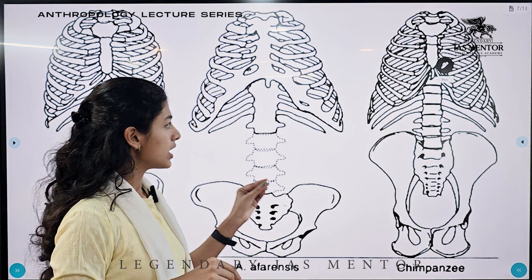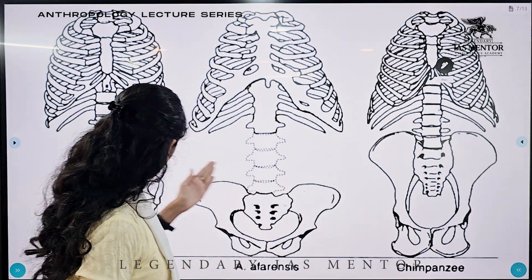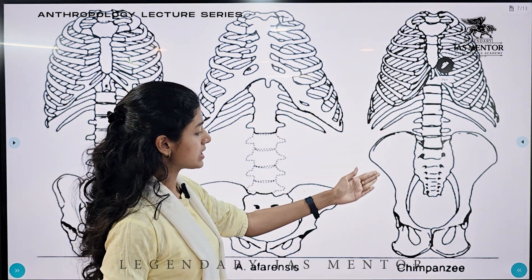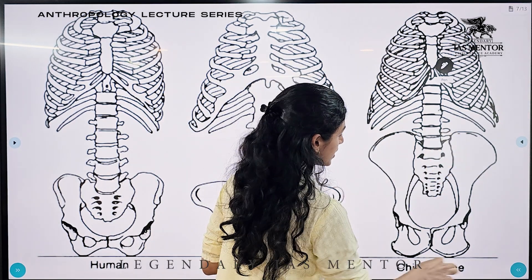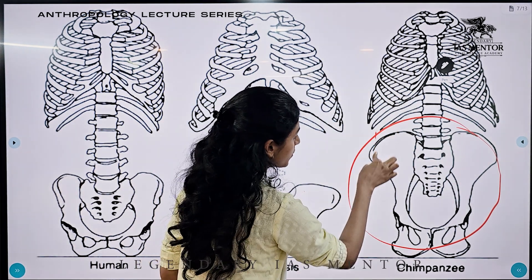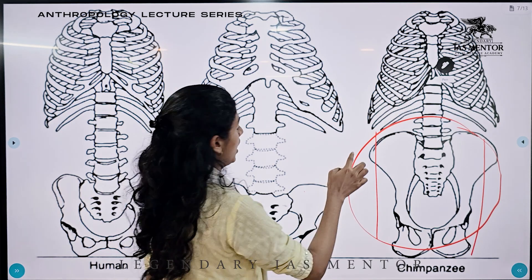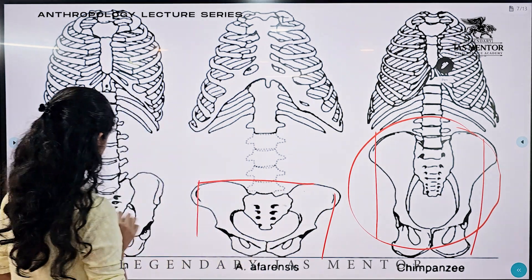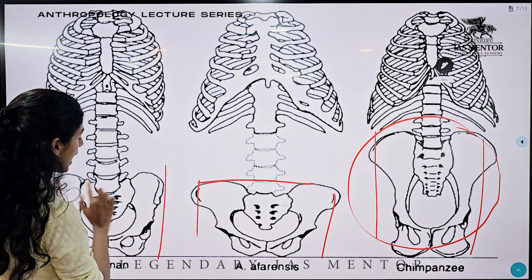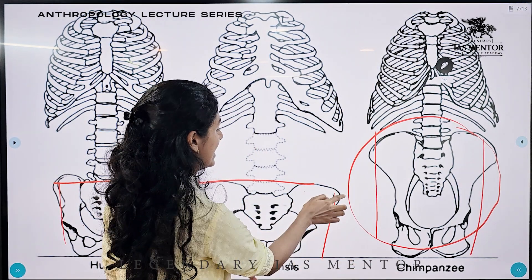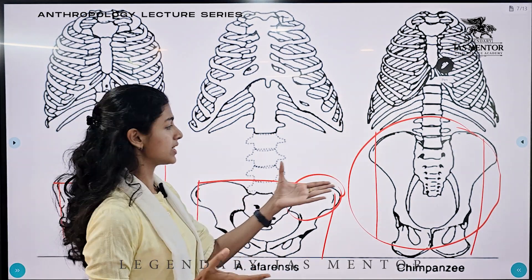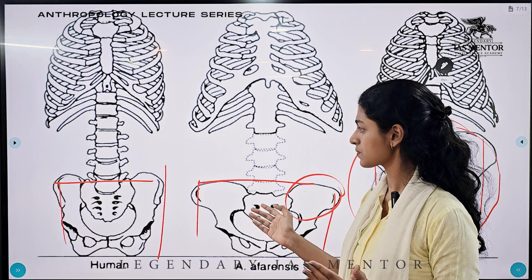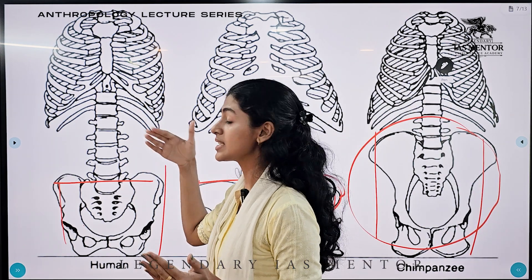Next, we look at the evolutionary changes that happened in the thoracic and pelvic region from chimpanzee to Homo sapiens. In the chimpanzee, the pelvic bones are elongated and parallel. In Australopithecus afarensis and Homo sapiens, the pelvic region is short and broad. The ileum region is much broader than in chimpanzees, which enables support of the abdominal organs and aids in bipedalism.